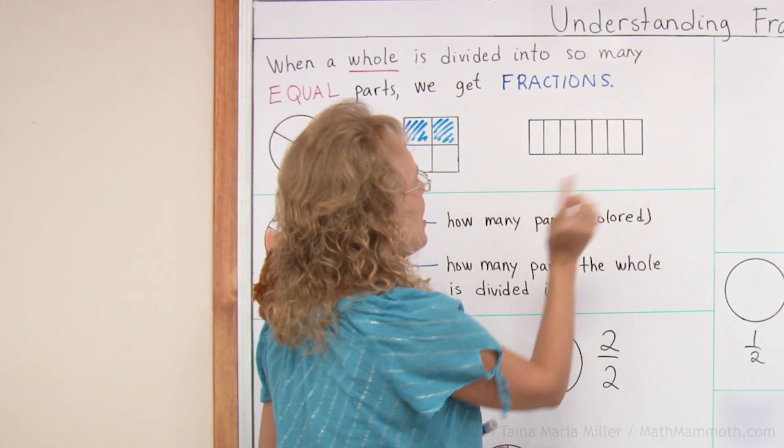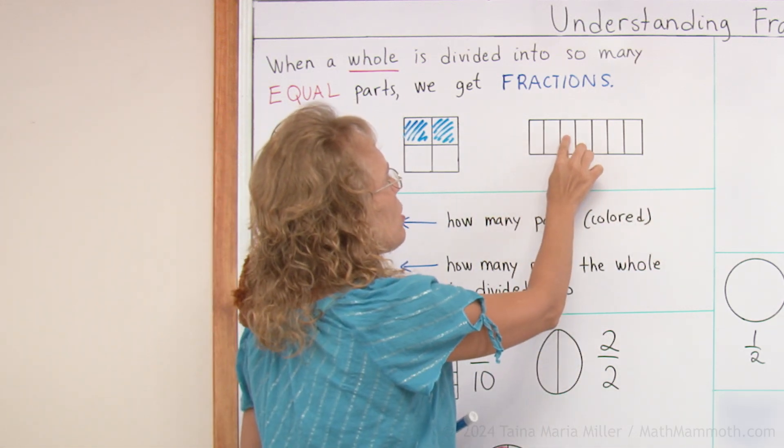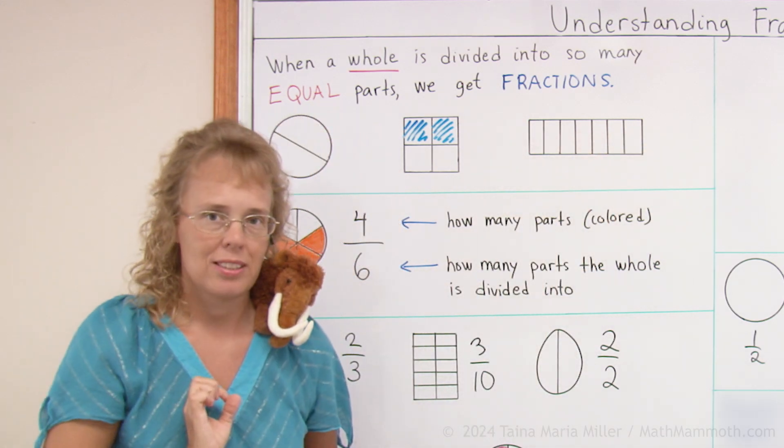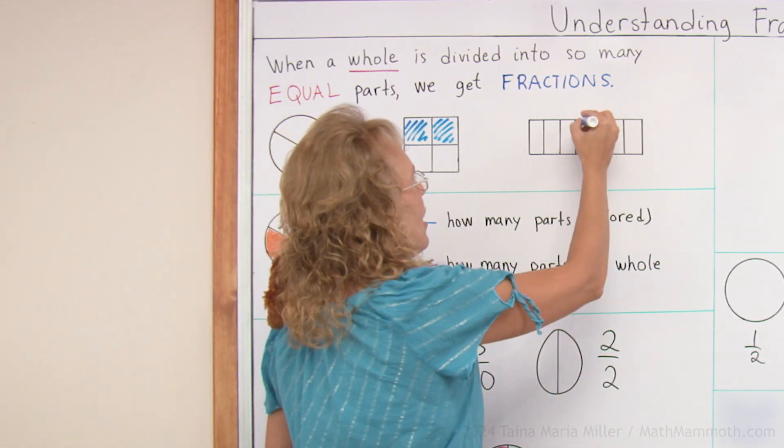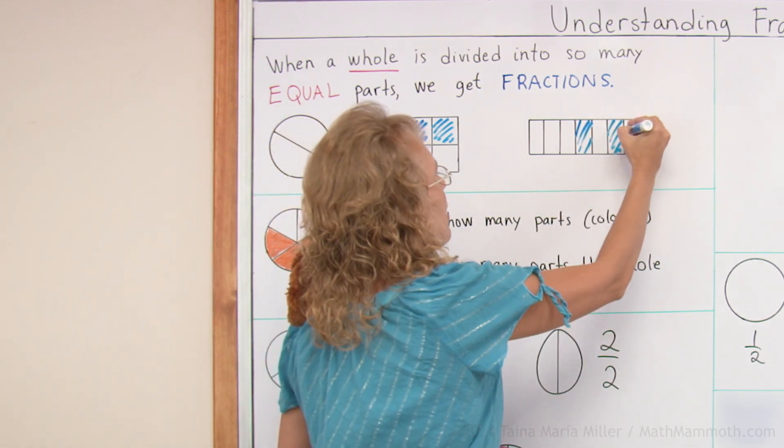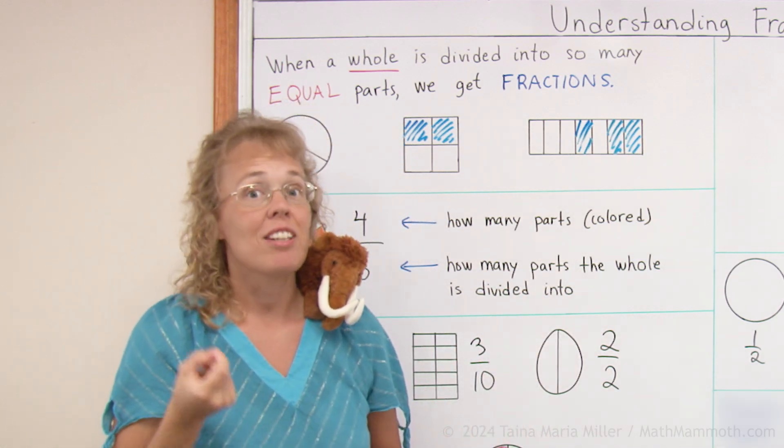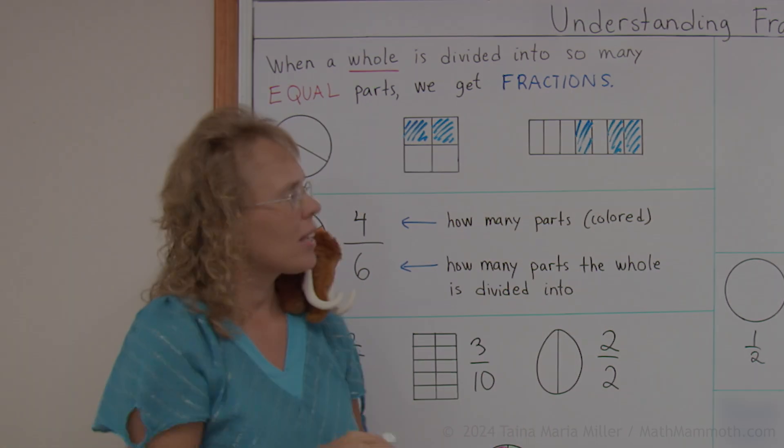Or this rectangle, it is divided into one, two, three, four, five, six, seven equal parts. So each part is one seventh. And maybe I would take three of them. And then I have three sevenths.